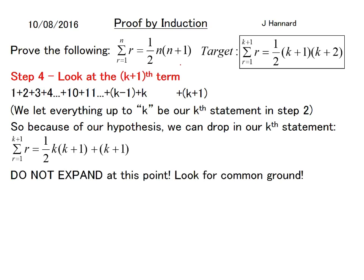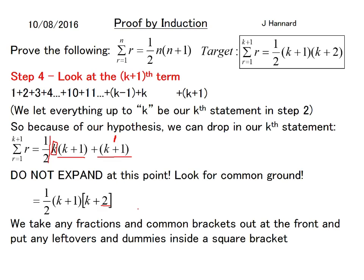Do not expand at this point and look for common ground. So what do I see there? By the way we always keep fractions to the front no matter what. So what do I see common between these? I see a k plus 1 and I see a k plus 1. So I hike that out at the front. So it's a half of k plus 1 and then k plus 2. You wonder where this 2 came from. Well we've got k left over from here and we have to times the half k plus 1. We just put a dummy 2 in there because the 2's will cancel out and it will just become k plus 1.